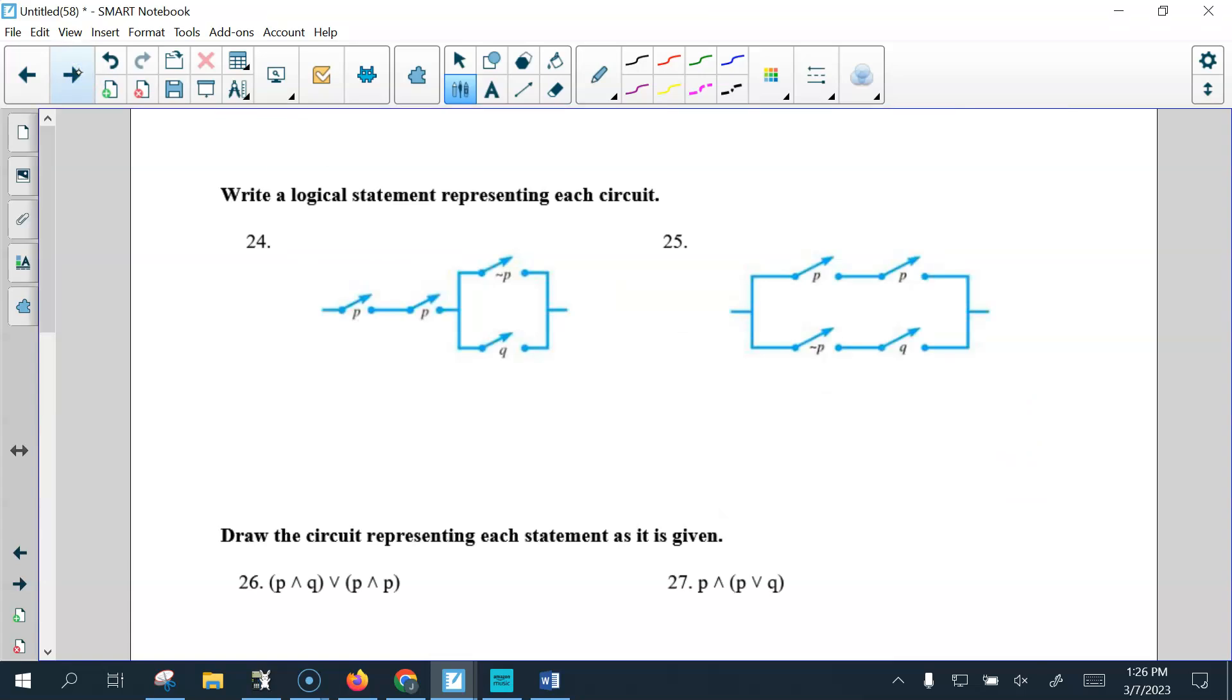Alright, now, we're writing statements based on the drawings. We have, remember, this is an and, straight line, straight line is and, the box is or. So, we simply write, P, and, P, and, and then the parentheses, not, P, or, Q. So, that's it. Now, we have an or, but remember, up here we have an and, and down here we have an and. So, we write, P, and, P, or, not, P, and, oops, I did a natural ampersand here. Q. That's it.